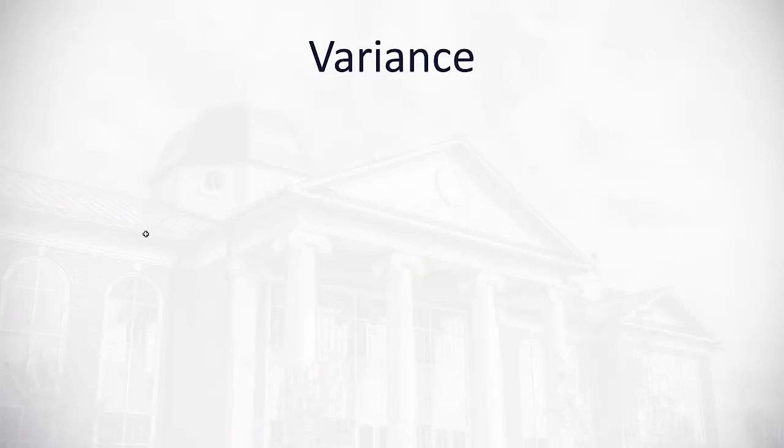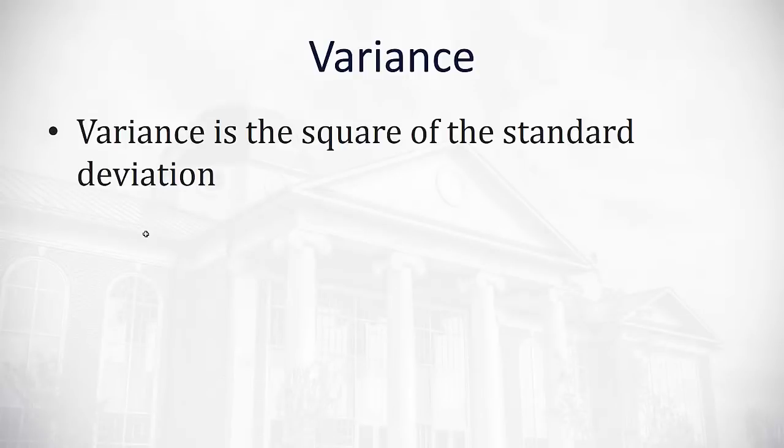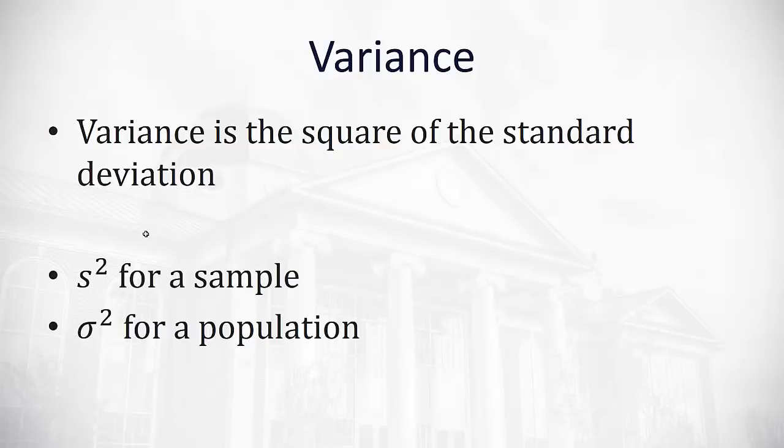There's one more measure of spread that's called the variance. I'm not going to spend a lot of time on it because it's very closely related to the standard deviation. The variance is the square of the standard deviation or what we would have gotten before we actually took that square root step. So s squared is the variance for a sample and sigma squared is the variance for a population. That's pretty straightforward so we won't spend much time on it here. I'll let you practice it on the assignment.